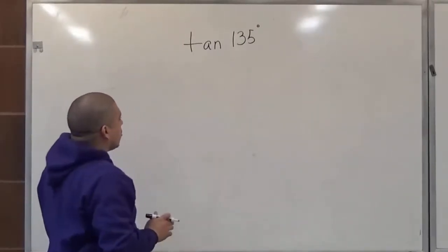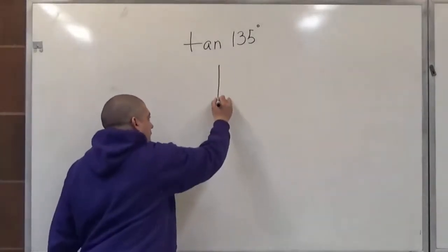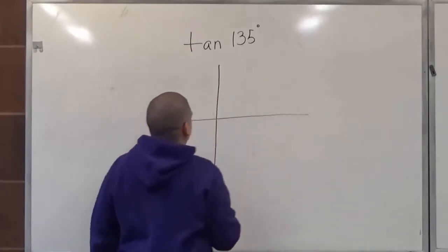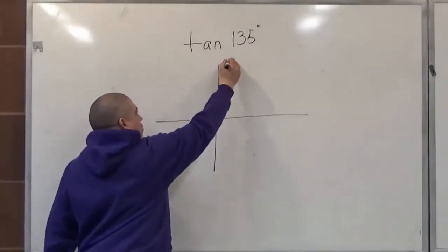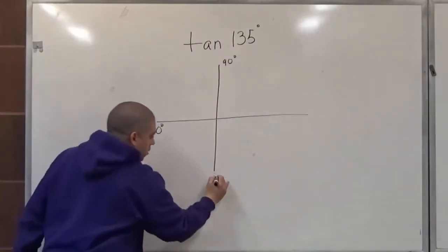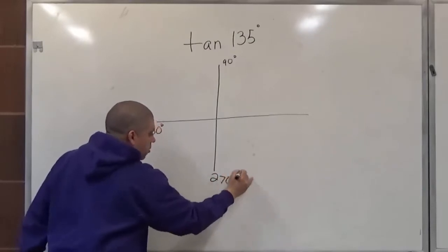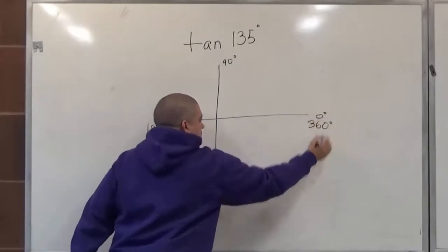So tangent of 135 degrees. The way you do this is, first you set up your axis, and this will be 90 degrees over here, this will be 180 degrees over here, this is 270 degrees over here, this is 360 degrees over here, and it's also zero degrees because it's the beginning.